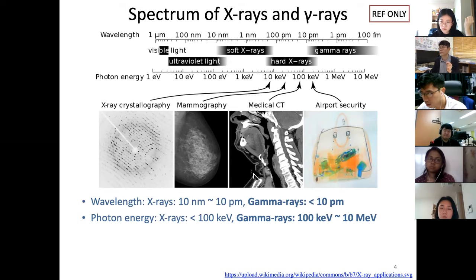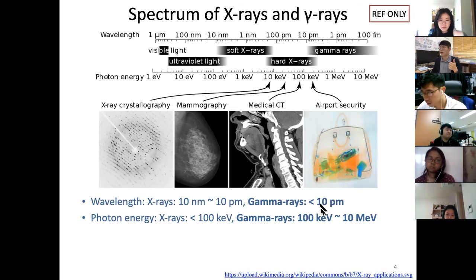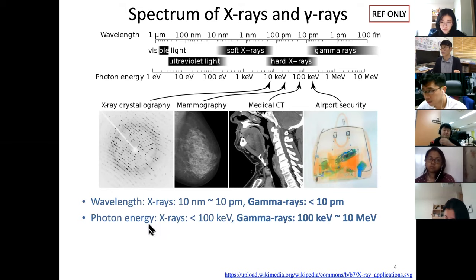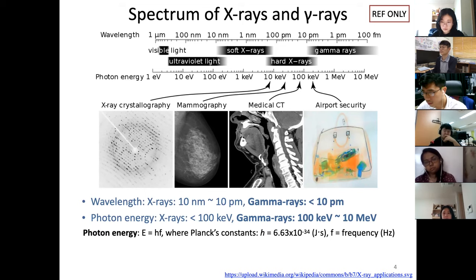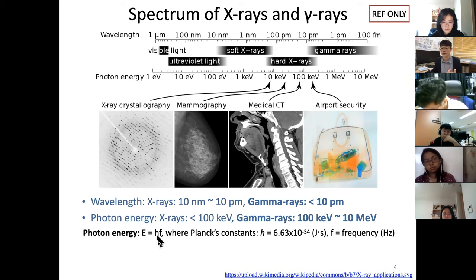X-rays are defined as having wavelengths from 10 nanometers down to 10 picometers. Gamma rays are even shorter — less than 10 picometers, which is smaller than the size of a hydrogen atom. Therefore gamma ray photon energy is higher: X-rays are below 100 keV and gamma rays above 100 keV. You can convert wavelength to photon energy using Einstein's equation E = hν.